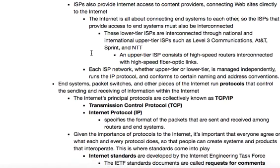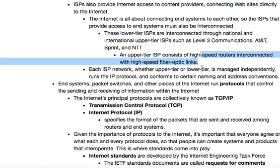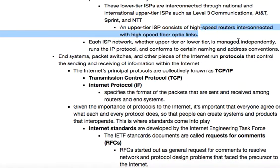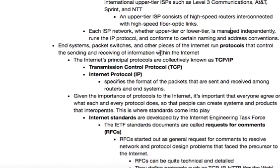ISPs also provide internet access to content providers, connecting websites directly to the internet. The internet is all about connecting end systems to each other, so ISPs that provide access to end systems must also be interconnected. These lower-tier ISPs are interconnected through national and international upper-tier ISPs, such as AT&T, Sprint, and NTT. This consists of high-speed routers and high-speed fiber optic links. Each ISP network, whether upper or lower tier, is managed independently, runs the IP protocol, and conforms to certain naming and address conventions.